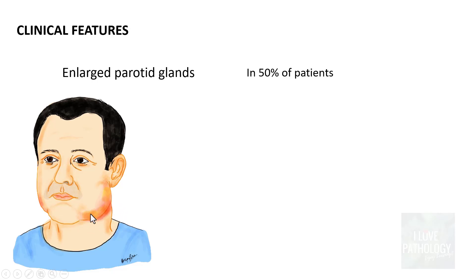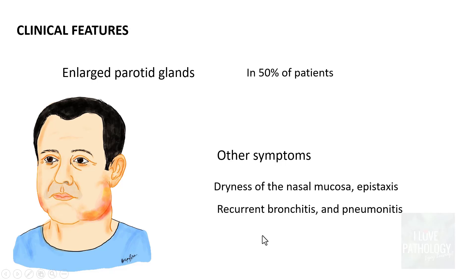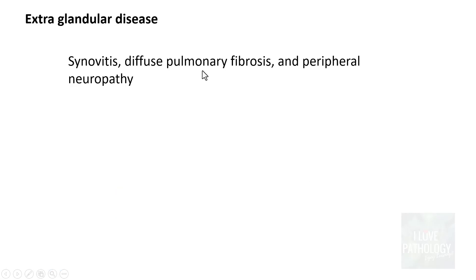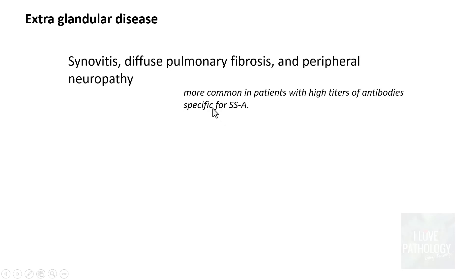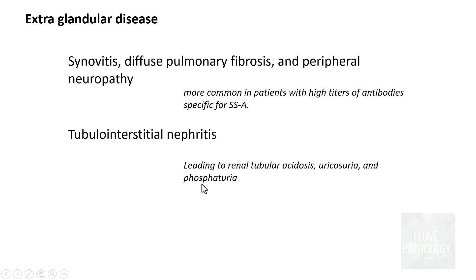Enlarged parotid glands are seen in 50% of patients; the enlargement is usually mild to marked and almost always bilateral. Other symptoms include dryness of nasal mucosa leading to epistaxis, and pulmonary involvement can cause recurrent bronchitis and even pneumonitis. Extra-glandular disease — most common in patients with high titers of anti-SSA/Ro antibodies — includes synovitis, diffuse pulmonary fibrosis, peripheral neuropathy, and tubulo-interstitial nephritis manifesting as renal tubular acidosis, uricosuria, and phosphaturia.